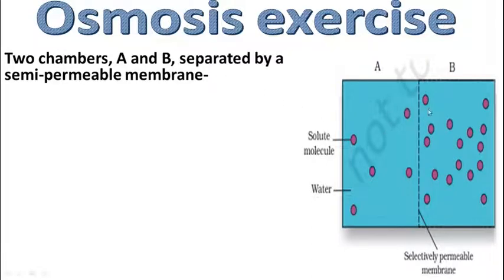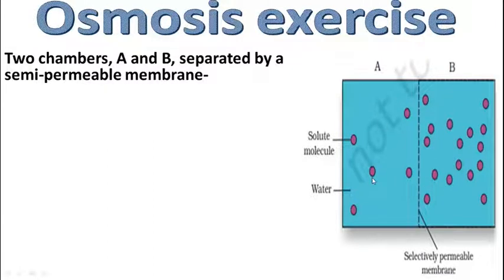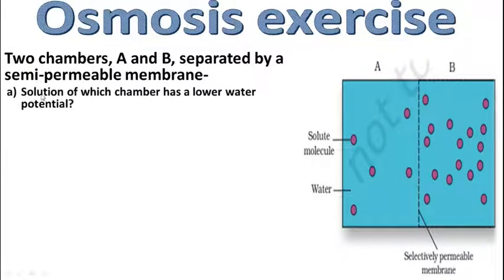These are two chambers — Chamber A and Chamber B — separated by a membrane. In one chamber, solute concentration is higher and particles are more; in the other side, solute molecules are fewer. Concentrated solution is on one side and dilute solution on the other. Solution of which chamber has lower water potential? जिसके अंदर solute molecules ज़्यादा हैं, उसका water potential कम होता है — तो B वाले का water potential कम है।